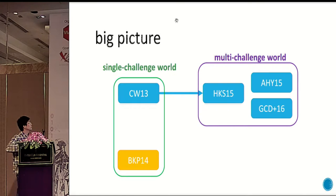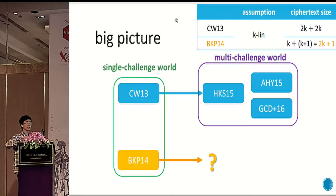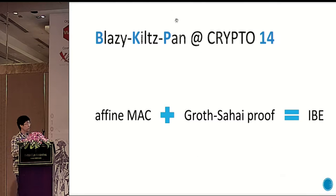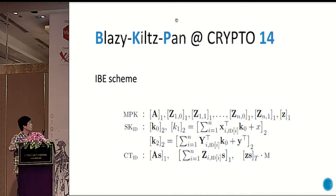Our strategy is based on the observation that current schemes in the multi-challenge world are extended from the paper by Chen and Wee at Crypto 2013. Another observation is that a recent paper proposed an almost tightly secure IBE which is more efficient than their work. So why not start from this one? Is it possible, and will the resulting scheme be more efficient? We first review their work — they propose a framework which transforms a fine-grained MAC to an IBE relying on a proof system. We look at one concrete scheme which is tightly secure.